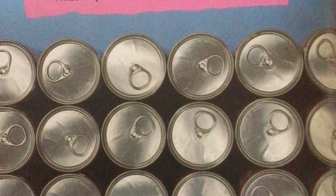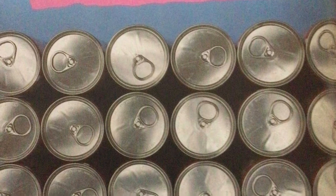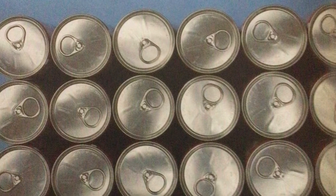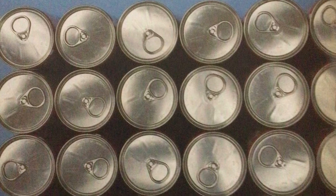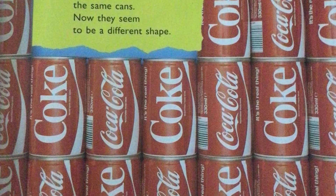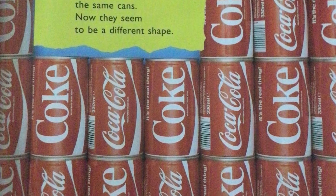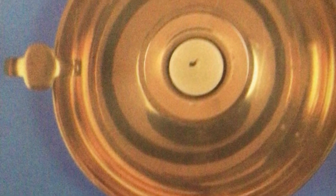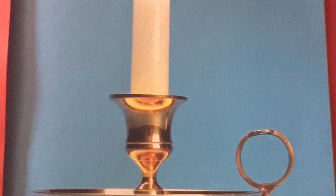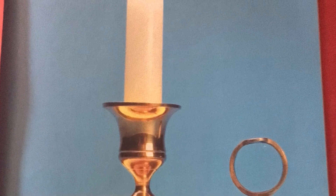Sometimes the shape of things seems to change when we look at it from a different angle. What shape are these cans? I think I see a lot of circles. These are the same cans from a different angle — now they seem to be a different shape. What shape do you see now? What shapes can you recognize here in this picture? I think they are round. The picture before was this candle. Now at this angle, what shapes can you see now? It's not the same.